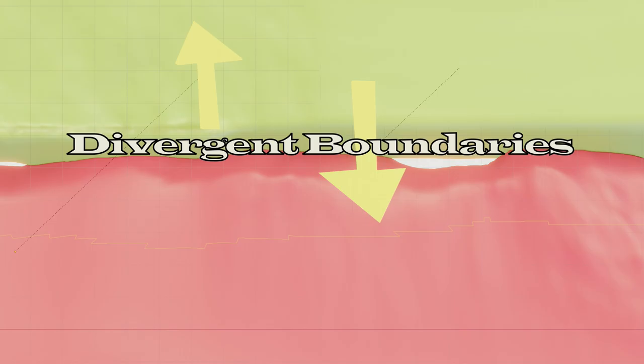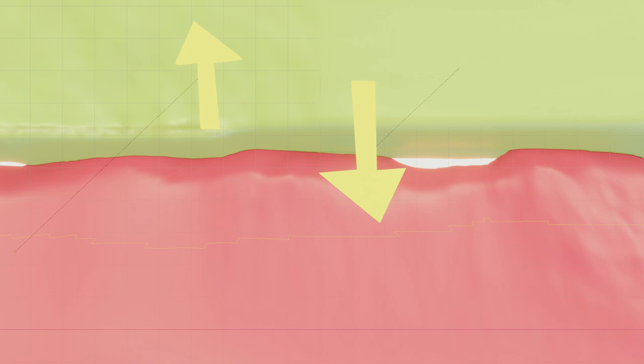Second, there are divergent boundaries. This occurs when two plates are moving in opposite directions. This can often result in hot magma rising from the middle gap. When this happens in the ocean, the magma solidifies into thin parallel sheet layers.